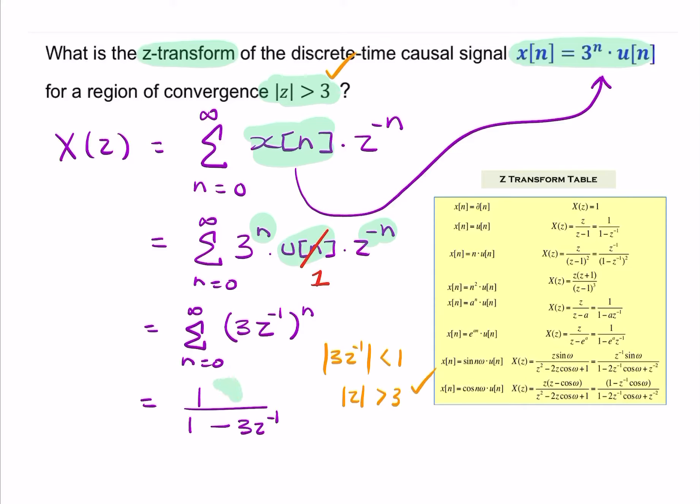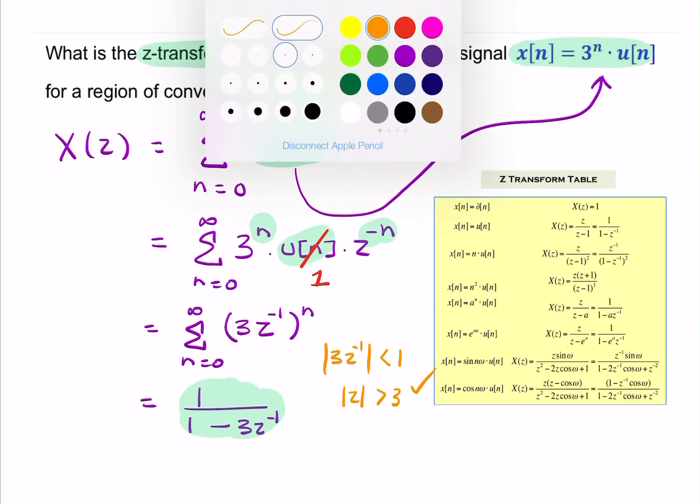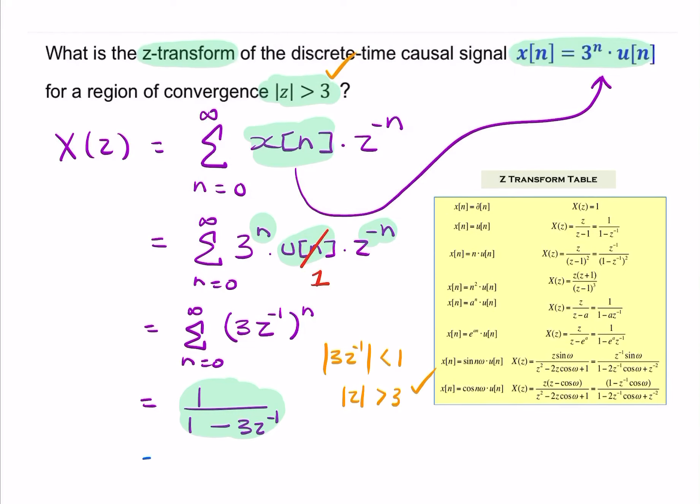So now I simply need to find, that's it, that's my final answer. Unless you want to simplify that, you could write that as z over z minus 3. That's by multiplying by z over z. So that would be your final answer.